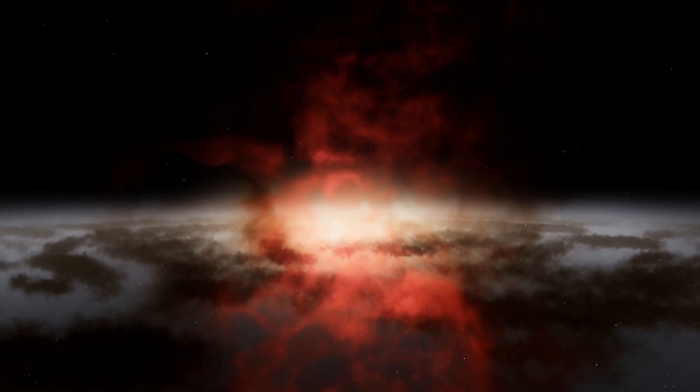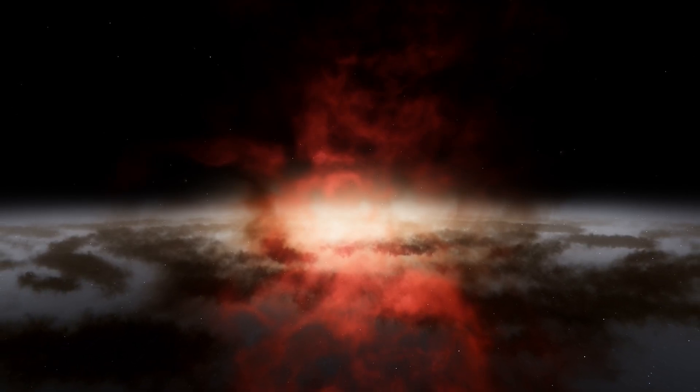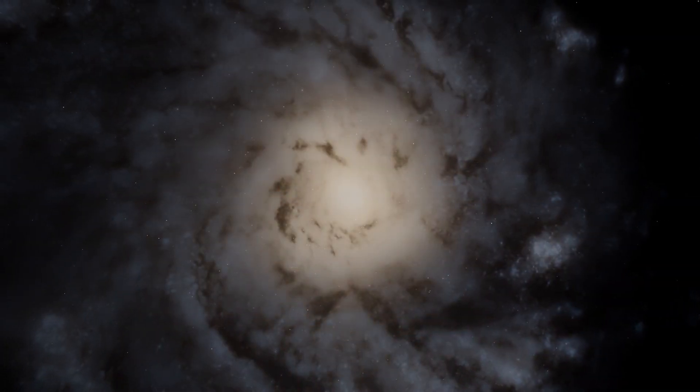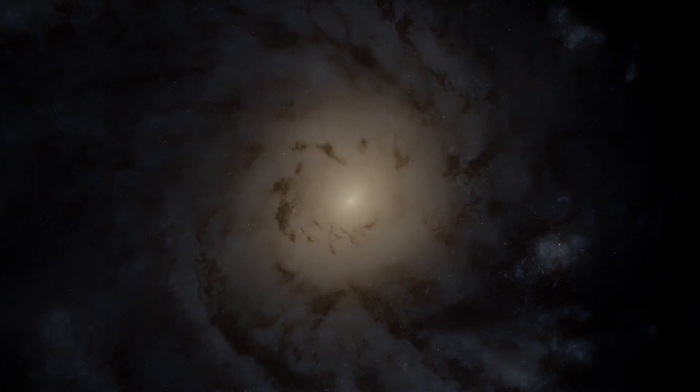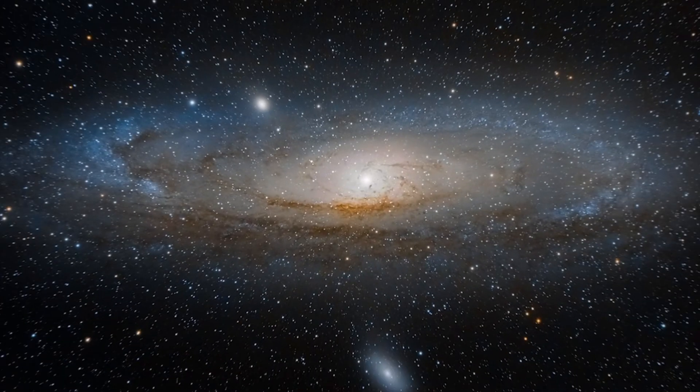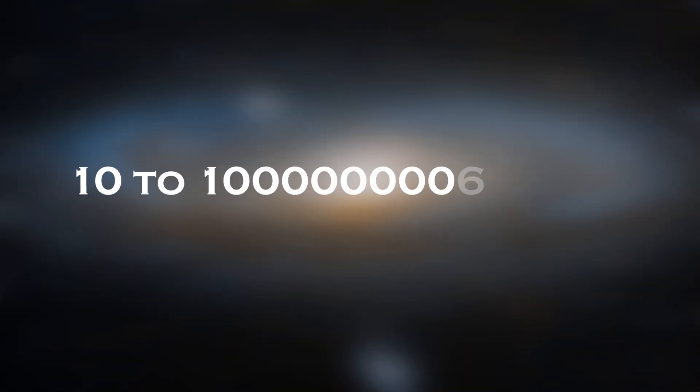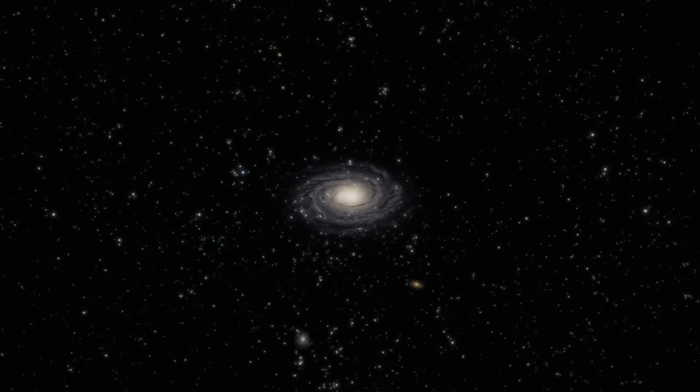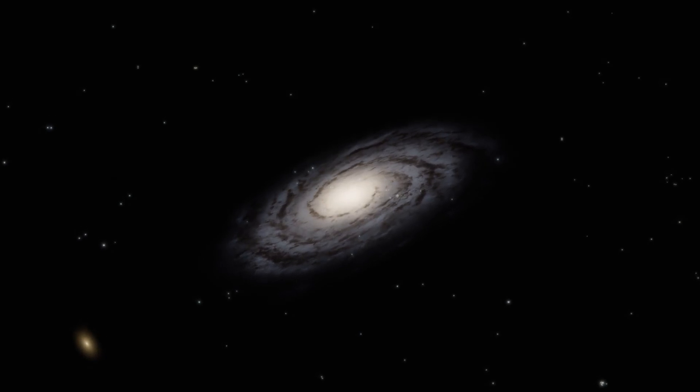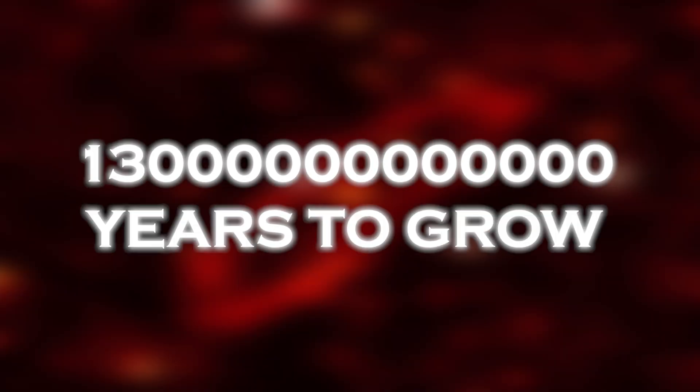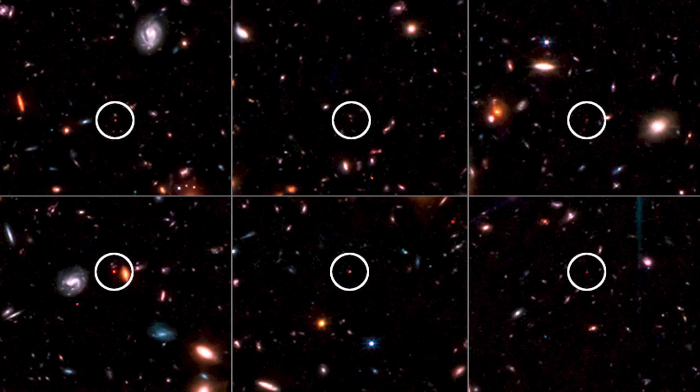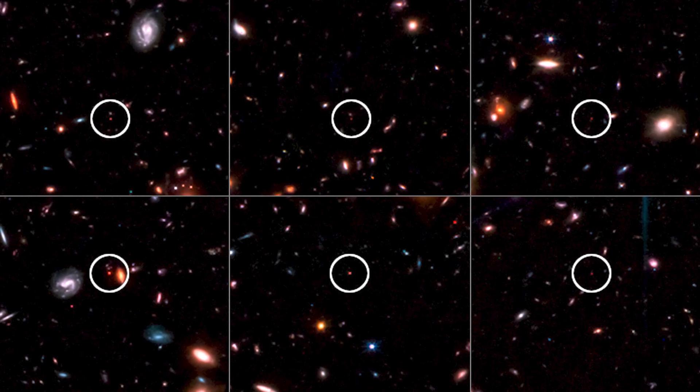Using stellar evolution models, the scientists calculated how many stars each of these galaxies would need to emit all their light. They found that the stellar masses of these six galaxies range from 10 to 100 billion times the mass of our Sun. This is comparable to or even greater than the mass of our own Milky Way galaxy, which contains approximately 60 billion stars and has had more than 13 billion years to grow.